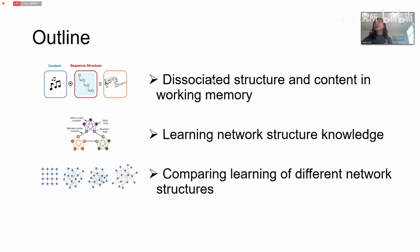Today I'm going to present three lines of experiments my lab has done. I come from the School of Psychology and Cognitive Science. We use cognitive behavior experiments and also record brain activities when subjects do tasks, then do data analysis on their brain data. These three works are all related to relational structure knowledge — how they are represented in working memory, how they are learned, and what the difference is between different relational structures.